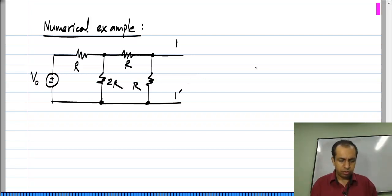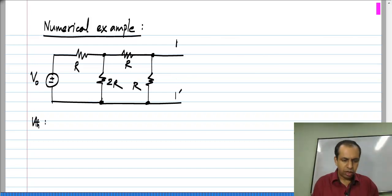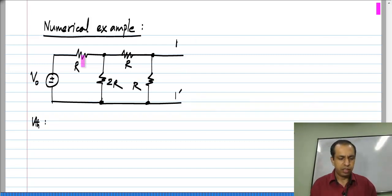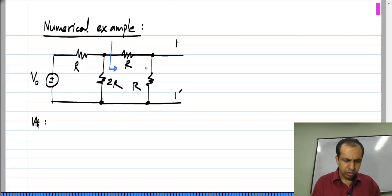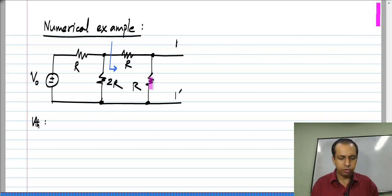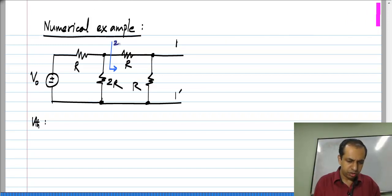Now I have to find the Thevenin voltage, and for that all I need to do is not connect anything between 1 and 1 prime and find the voltage across it. Looking here, I have a series combination of R and R which gives me 2R, so this is 2R, and looking here I have 2R parallel 2R, so I have R.